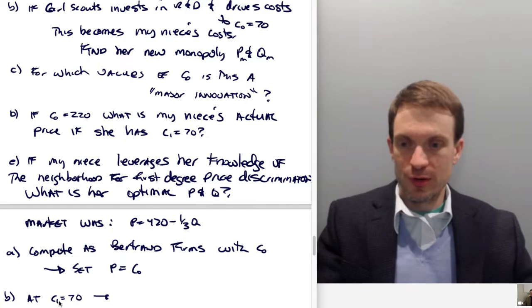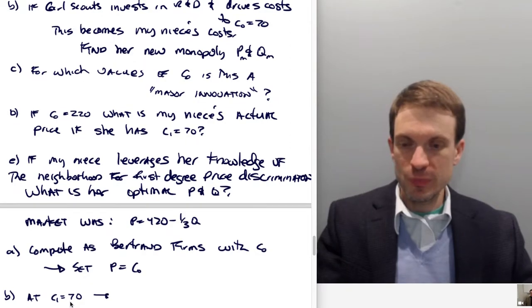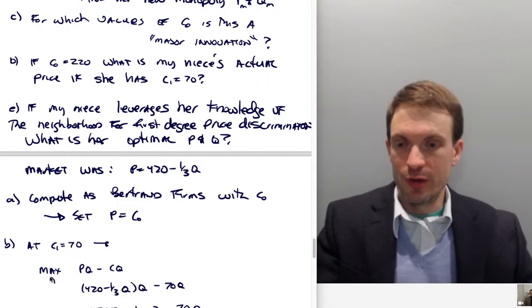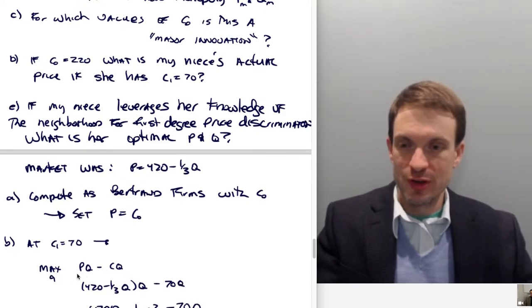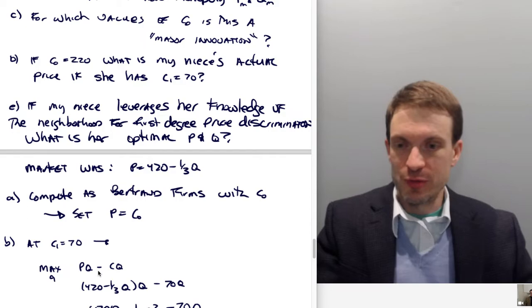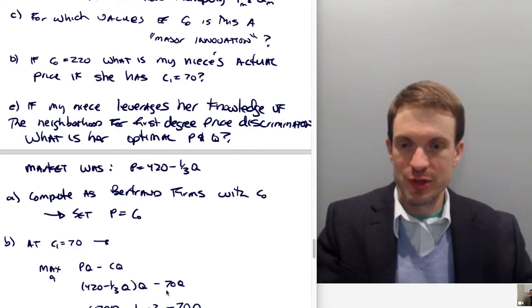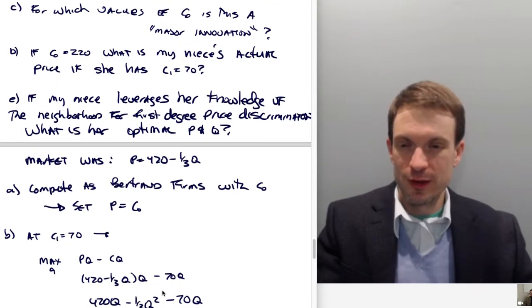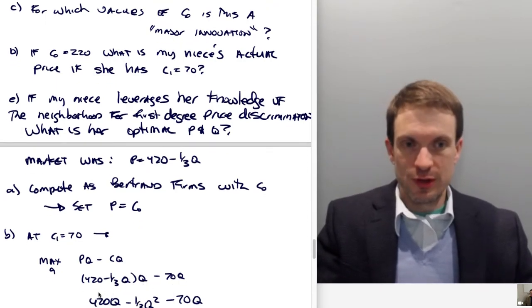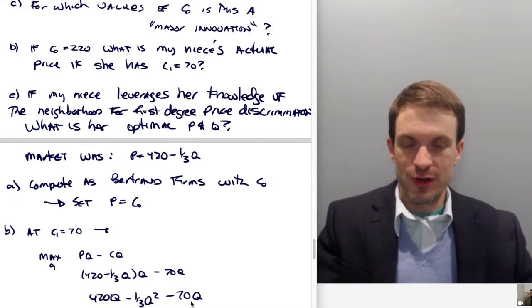Suppose Girl Scouts, and therefore my niece, has a cost of 70. What's their profit-maximizing quantity and price? Here's the profit maximization. It's price times quantity minus cost times quantity. Here's my inverse demand: (420 - (1/3)Q) × Q - 70Q. Distributing the Q,